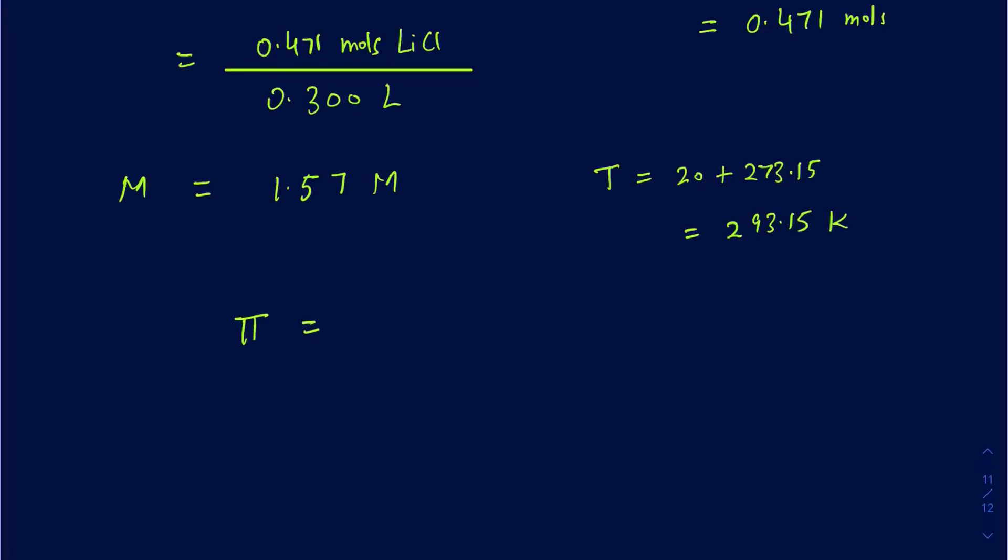So go ahead and calculate the osmotic pressure now. So your i is 2, the molarity is going to be 1.57 molar, your R is going to be 0.0821 atmosphere liters over moles Kelvin, and then your temperature is going to be 293.15 Kelvin. If you wonder how the units cancels out, then you can see the Kelvin here will cancel out Kelvin.